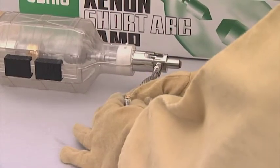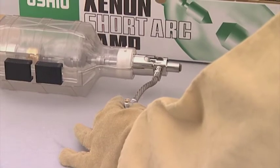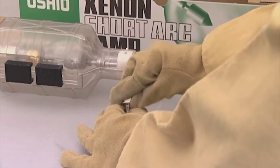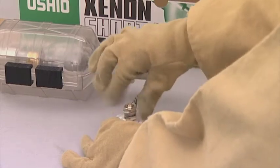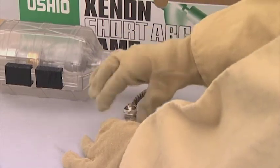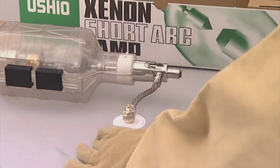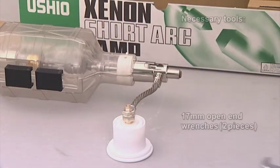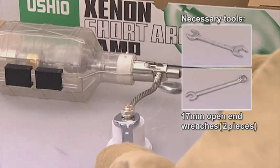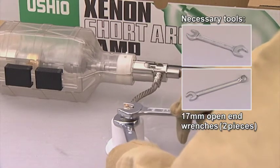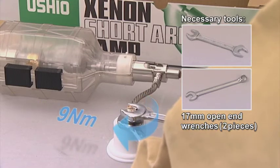Install the anode wire lug into the anode socket. Ensure that there is a flat washer between the lock nut and the anode wire lug. Tighten the nut to 9 Nm.